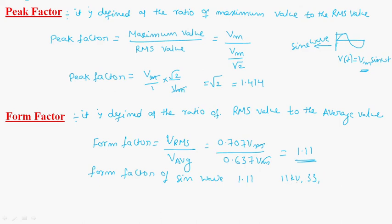This is the reason why the voltage levels are multiples of 11 only, because of form factor. The value of form factor is 1.11. This is about peak factor and form factor. Thank you.